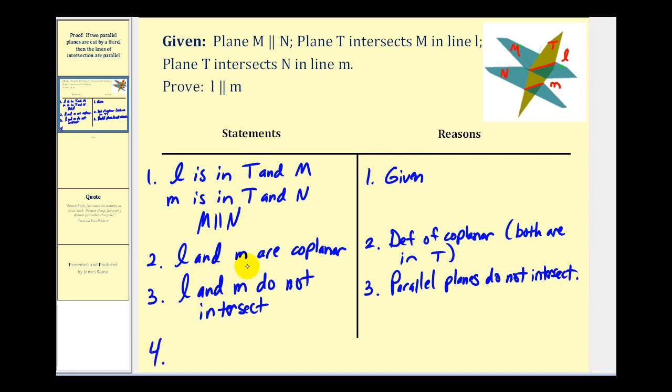Notice now we've stated that the two lines are coplanar and they don't intersect, and therefore the two lines are parallel. And this is by definition of parallel lines.